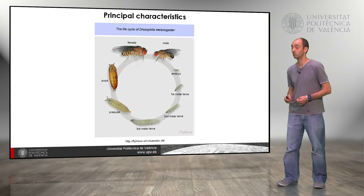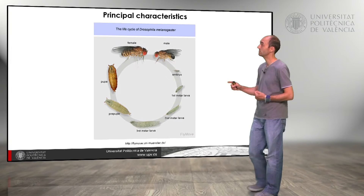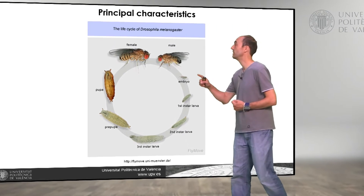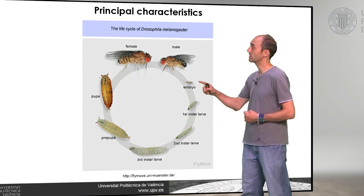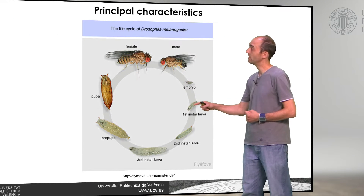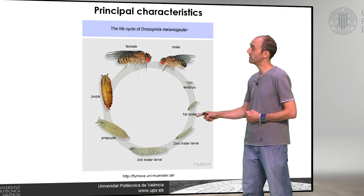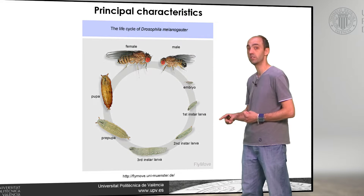It has a very compressed life cycle, but with all the steps. We have the females and the males — the females are fertilized and lay an embryo, an egg, and from that embryo a larva appears that grows through three different stages.